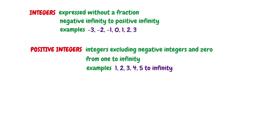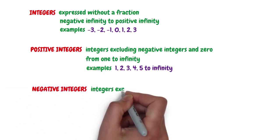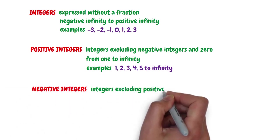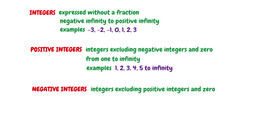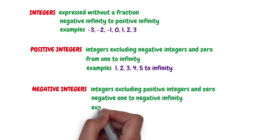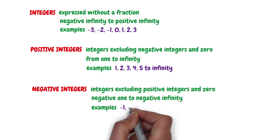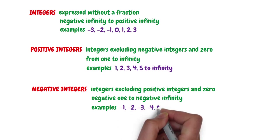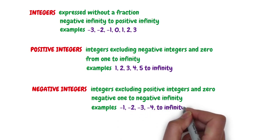The third set of numbers is the negative integers. These are integers excluding positive integers and 0. They run from negative 1 to negative infinity. Examples of negative integers include negative 1, negative 2, negative 3, negative 4, to infinity.